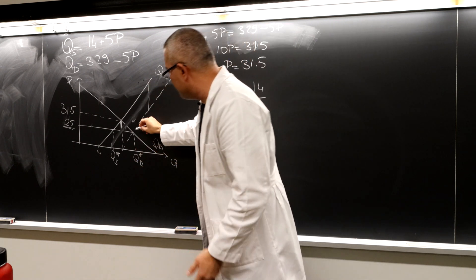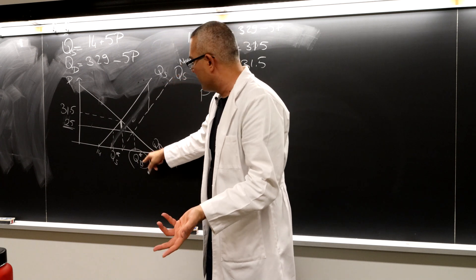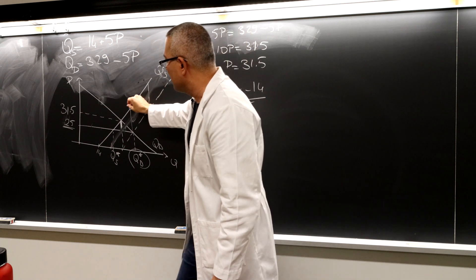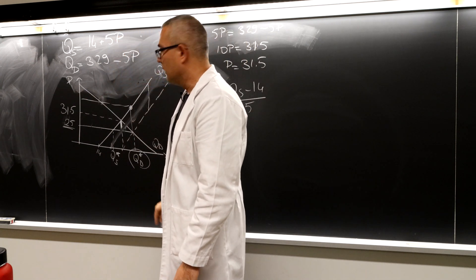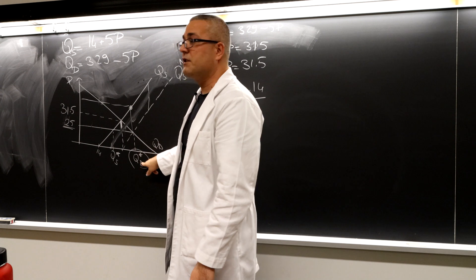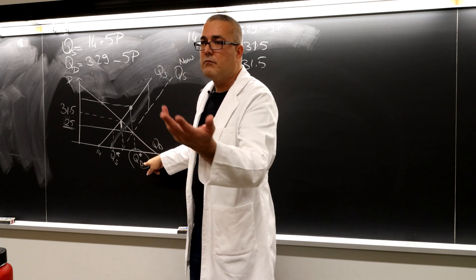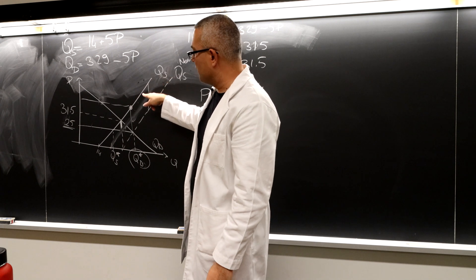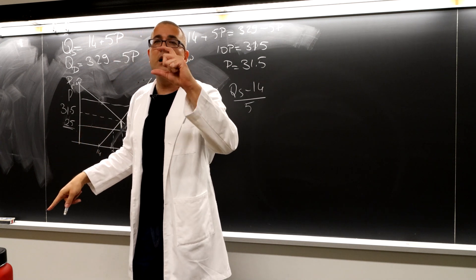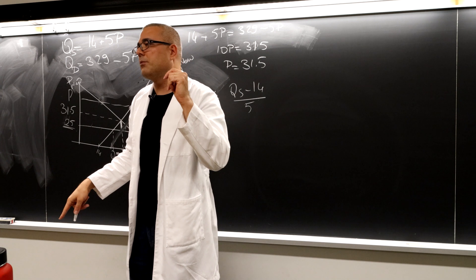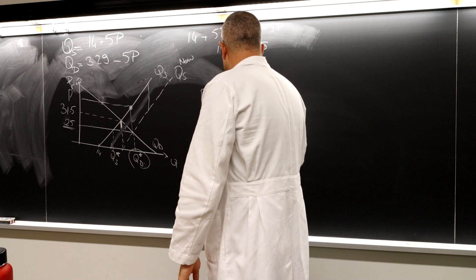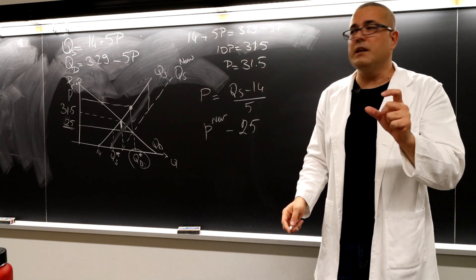Finding this difference is kind of easy. If you calculate, for example, this quantity level, just plug it to your supply curve, this P. We have to first find this Q d star. Whatever it is, just plug it to your supply curve, you're going to find this price. Let's call it P new. So P new minus 25 is the amount of subsidy you need.